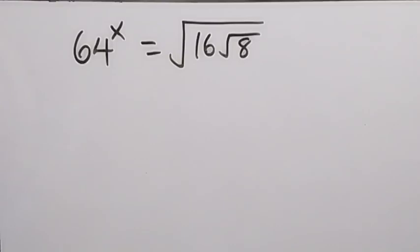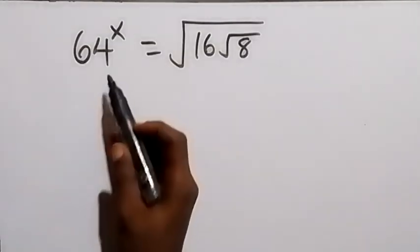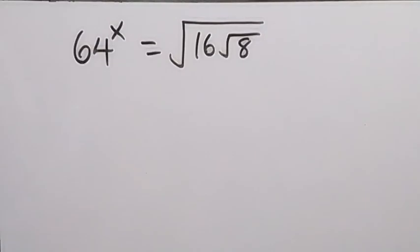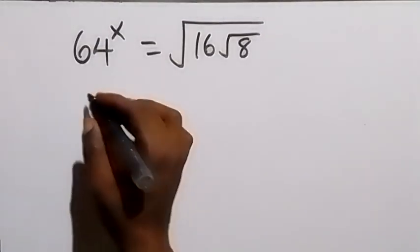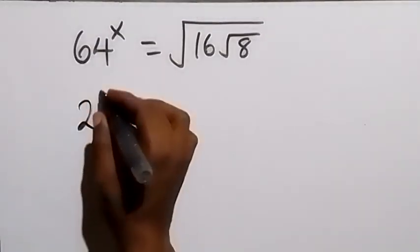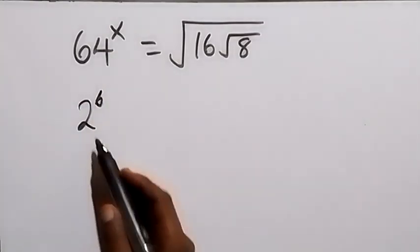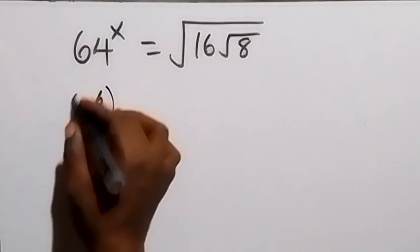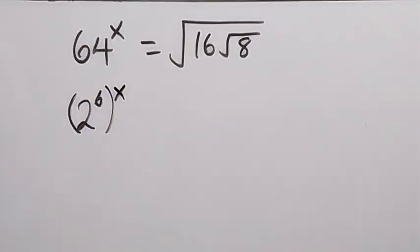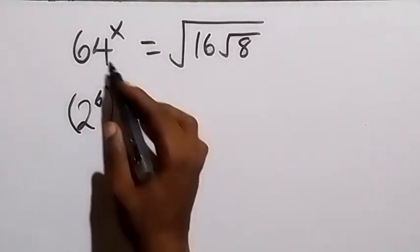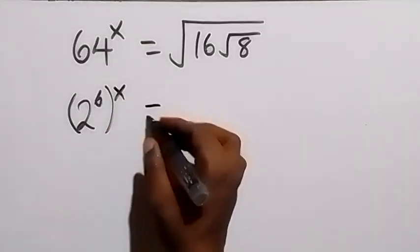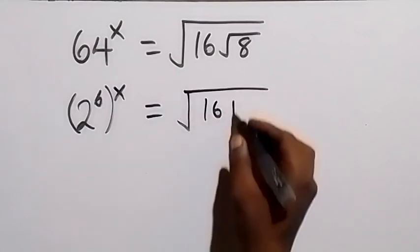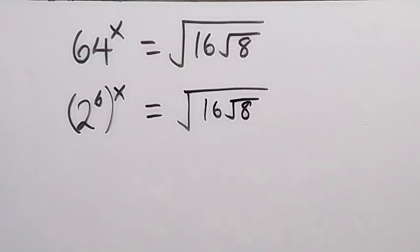Hello, you are welcome. How to solve this problem: 64 raised to power x equals the square root of 16 then root 8. Let's rewrite this — 64 is the same as 2 raised to power 6, that is 2 multiplied by itself 6 times. So we have 2 raised to power 6, raised to power x, equals the square root of 16 then root 8.